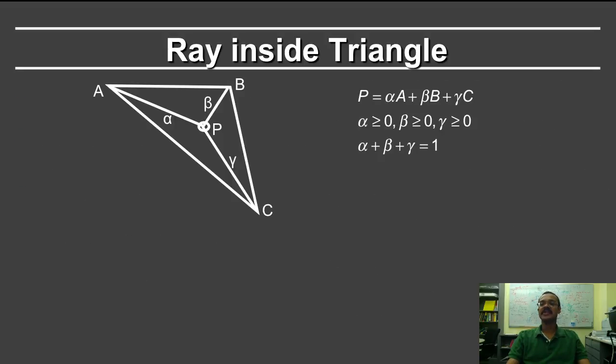Given these barycentric coordinates, I want to check if the ray lies inside the triangle. So I have my hypothesis for the point p, which is where the ray intersects the plane. And I'm going to find α, β and γ to say p lies inside the triangle.